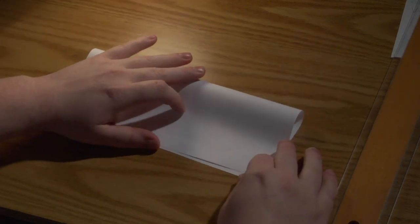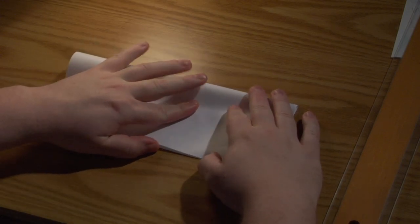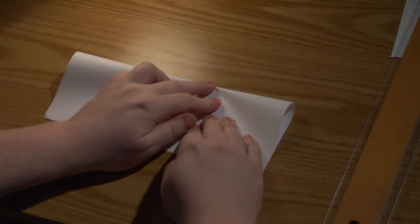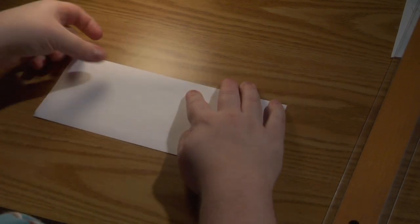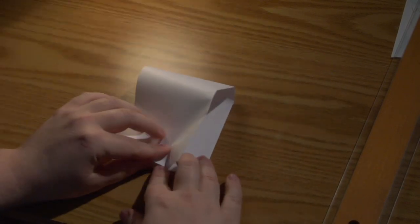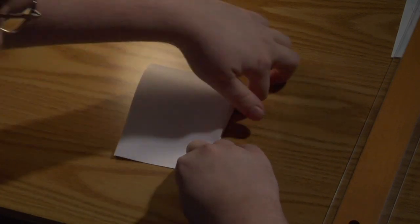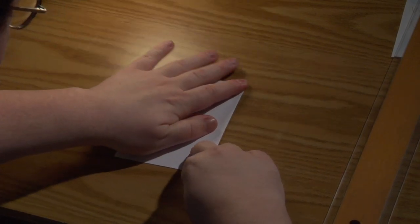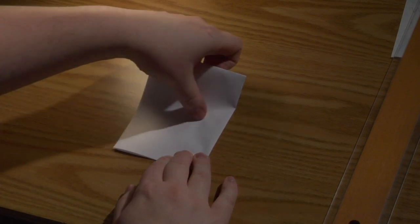So first you take your piece of paper and then you fold it over in half. It doesn't need to be perfect. Then you fold that in half, and then you fold it in half again.